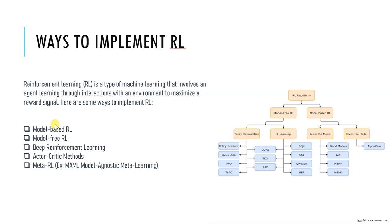In this type of model, we predict the outcome of actions using state, rewards, and other parameters. For example, a chess player can use a model of the game rules to simulate different moves and choose the best one. This is an example of model-based reinforcement learning.